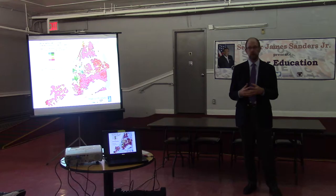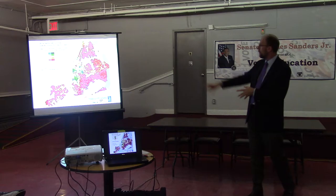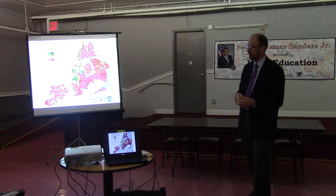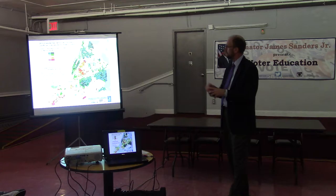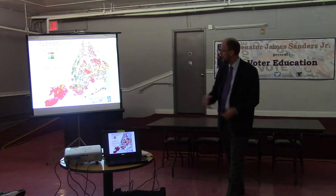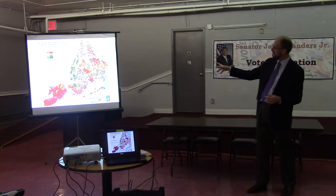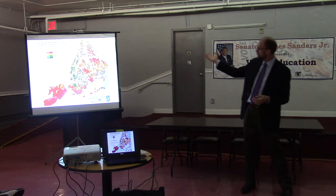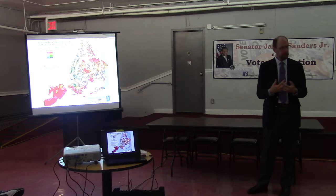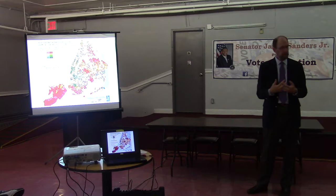This is the vote pattern for Zephyr Teachout, who ran against Cuomo — Cuomo did very well in the red areas, and Teachout did well in a couple of areas. This is how Hillary Clinton did in 2008 in the presidential primary, and almost a mirror opposite of that is how she did against Bernie Sanders this time around. And this is the map of who voted for Donald Trump. One interesting thing is that in heavily Democratic areas you can't vote in the Republican primary, so there are a lot of blank areas on the map — people just couldn't vote.